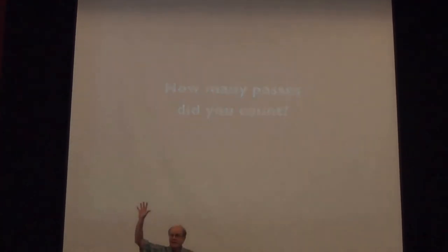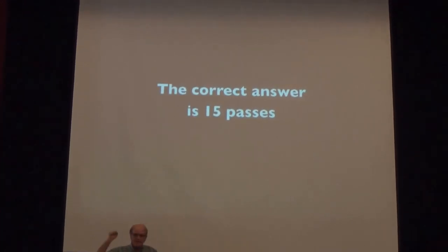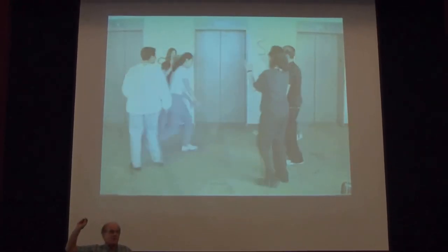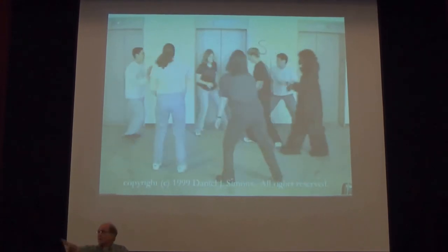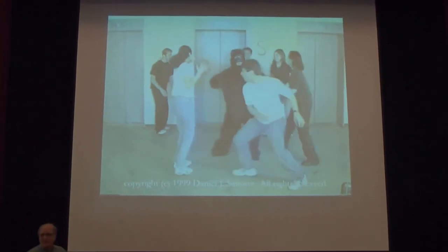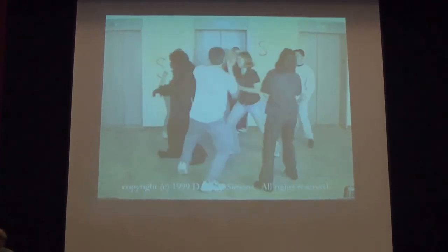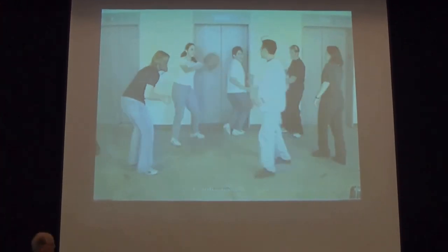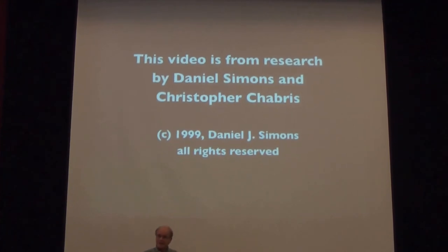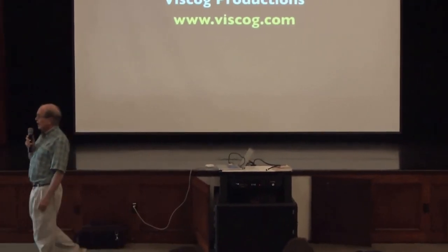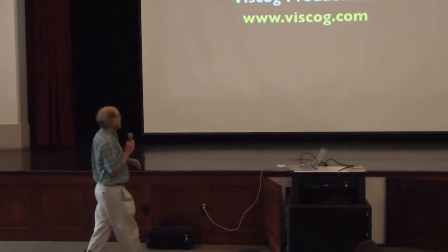How many? Fifteen. No, fifteen. But did you see the gorilla? How many did? That's usually about the number, about half. See the gorilla? The gorilla walked across the screen while you were counting number of basketball passes. If you remember, we ended last class talking about attention. This is an example of how our attentional systems work and don't work.